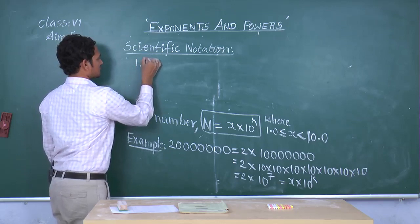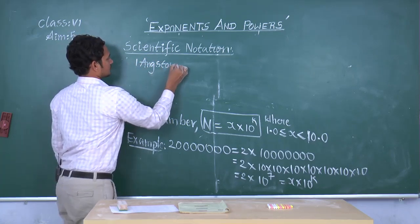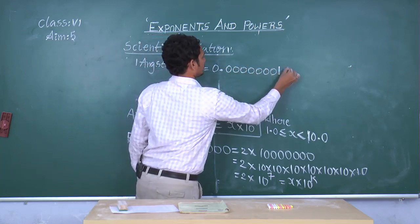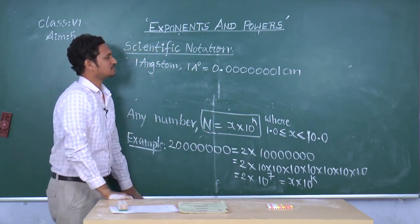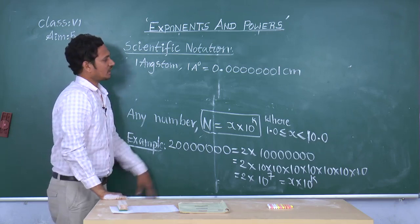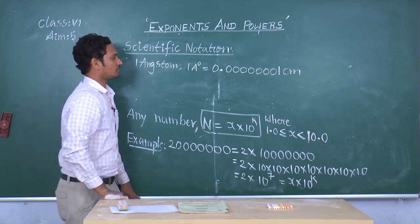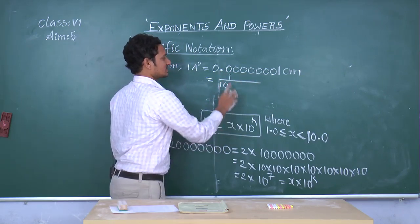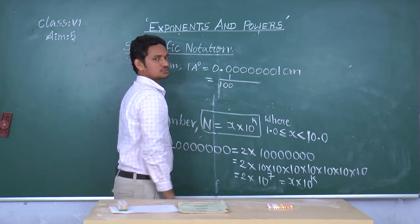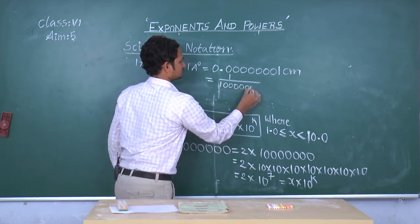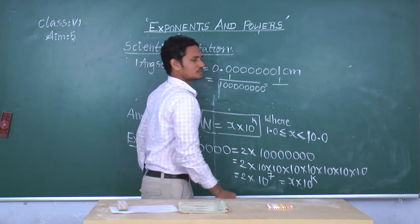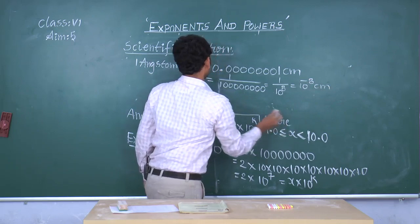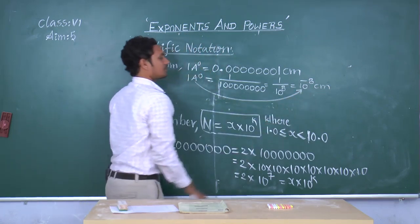Since we know 1 Angstrom is equal to 0.1 nanometers, this is sometimes difficult to remember and difficult to read. We are trying to convert it into simplest form. After the decimal point there are 8 digits, so those many zeros will come in the denominator — 8 zeros. We can write it in exponential form as 10 power 8, and also as 10 power minus 8. Finally, 1 Angstrom can be written as 10 power minus 8 centimeters.